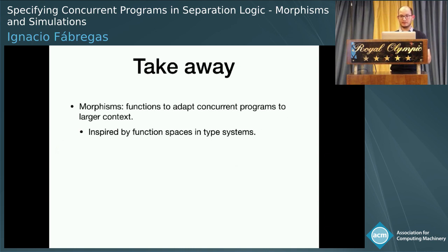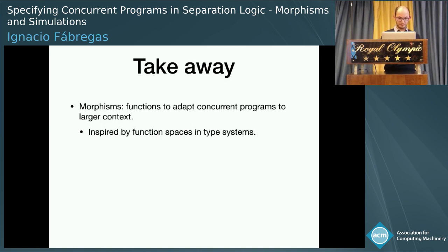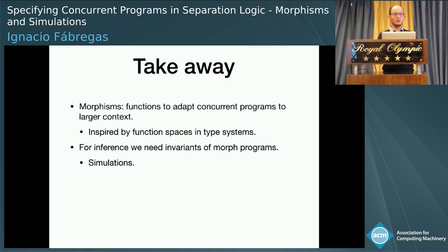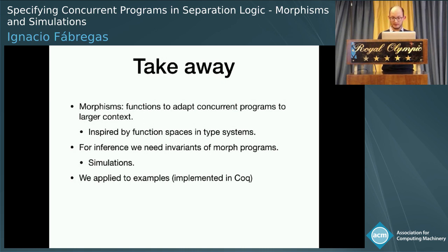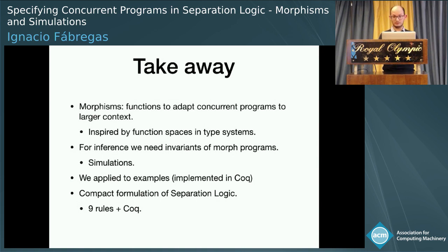To wrap up, the takeaway is that we have defined morphisms to adapt concurrent programs to different contexts. This is an idea essentially inspired by function spaces in type theory. For the inference rule we needed some invariant — that's what we call simulations. We have applied this to examples implemented in Coq, available on the web page, and this led us to a compact formulation of separation logic with only nine additional rules on top of Coq. Thank you very much, and I'll be happy to answer your questions.